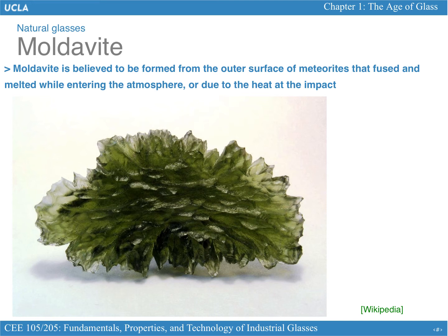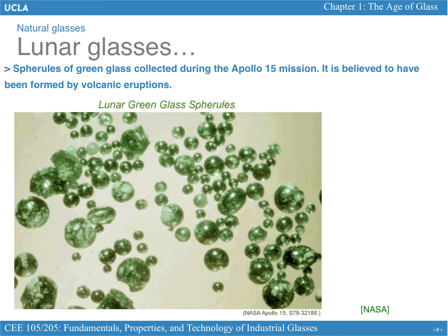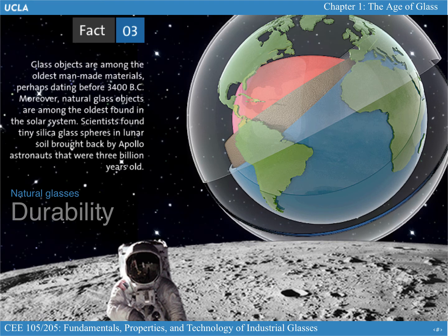Another example is glasses found on the moon — not on Earth. These are believed to have formed due to former volcanic eruptions on the moon. Some pieces of glass were formed by the melting of rocks during volcanic eruption, and as they froze into solids, they turned into glasses. What is very interesting about these glasses found on the moon is that they are about three billion years old — roughly half the age of the universe. That is proof again of how durable glass can be, surviving for millions if not billions of years.